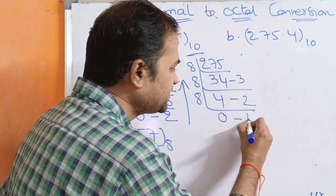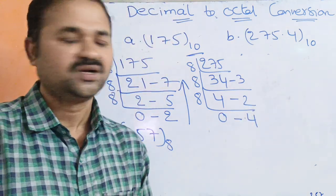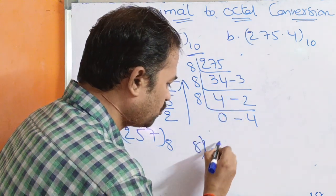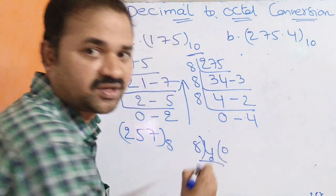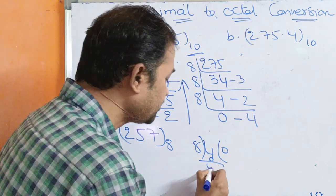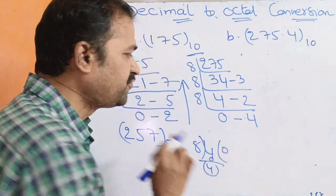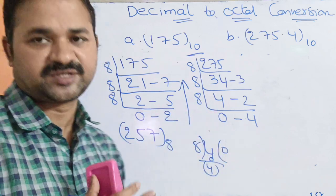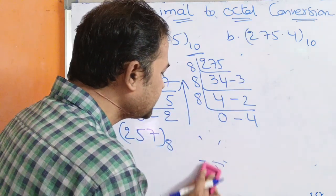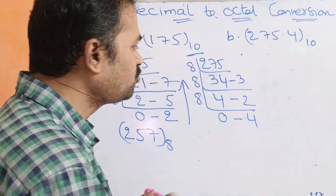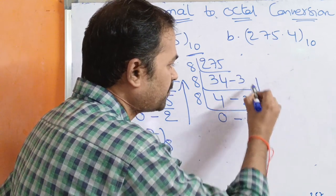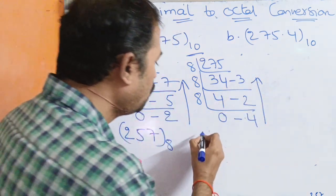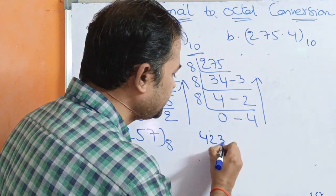Dividing 4 by 8 gives quotient 0 and remainder 4, so we can stop the process. Reading the remainders from bottom to top gives us 4, 2, 3. So the integer part result is 423.